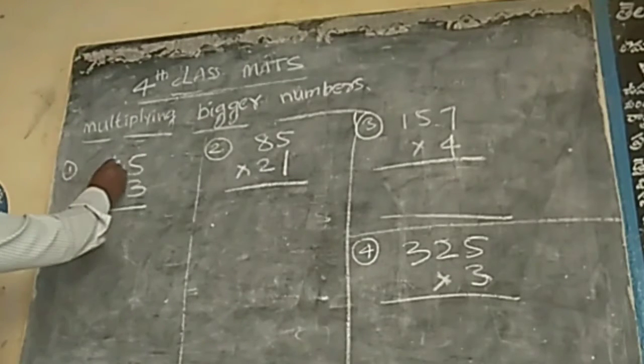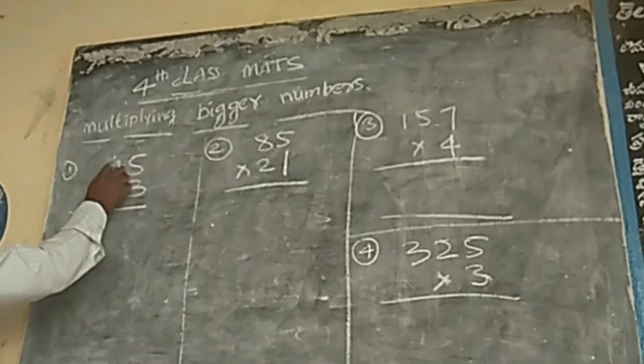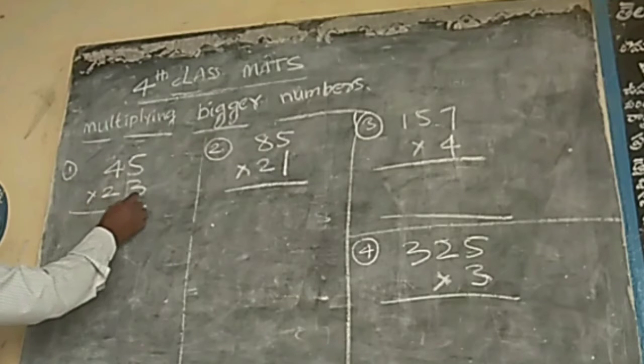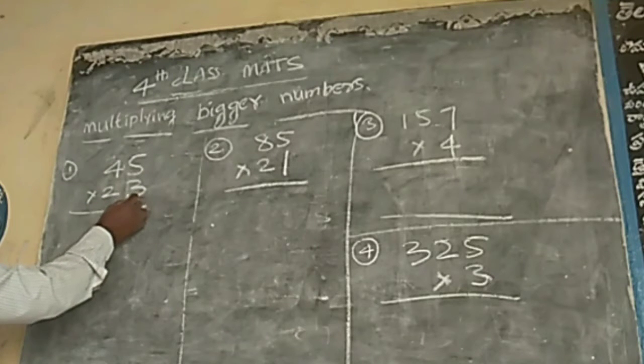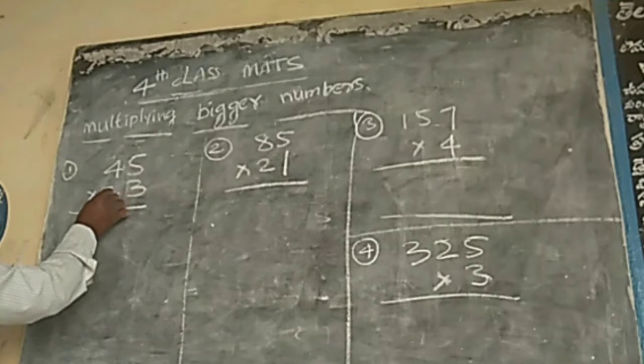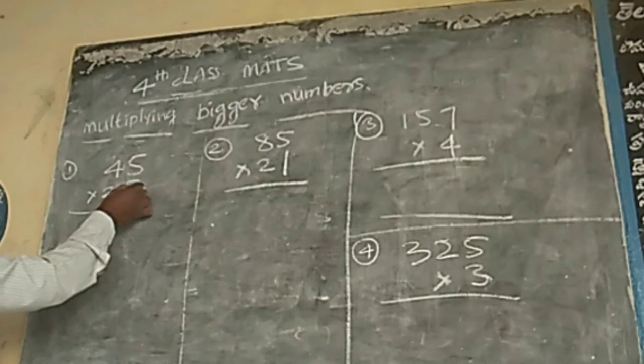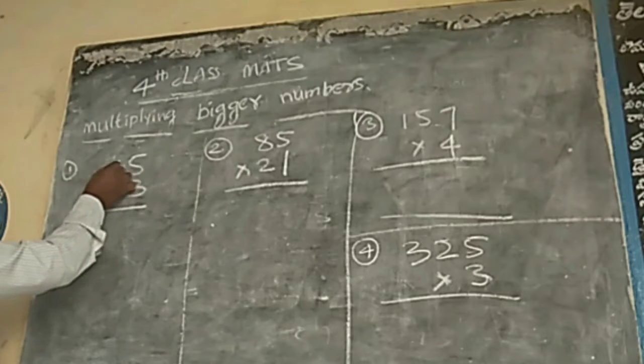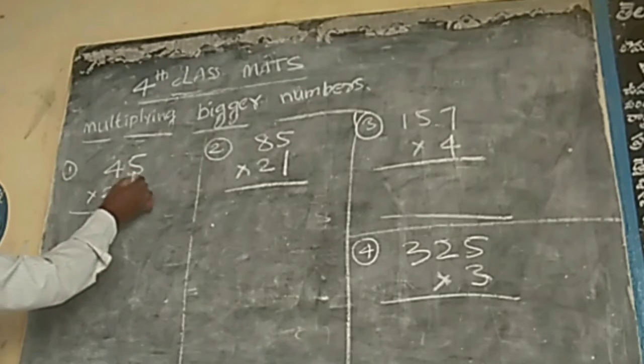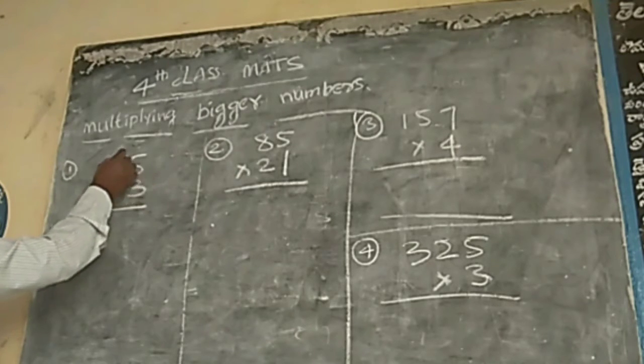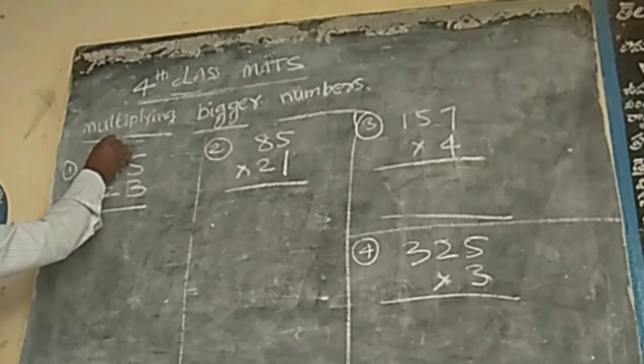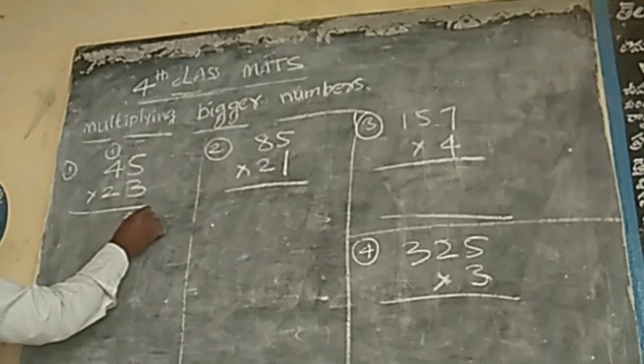See, first one, 45 into 23. 45 is multiplied by 23. First you take 3, this is the 1 space. This is the 2 in the 10 space. So multiply first you take 3 and multiply this number. First 3, 5, 15. 1, 5, right in one place.